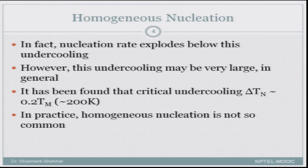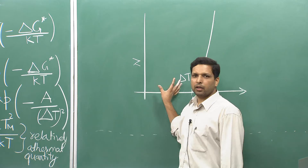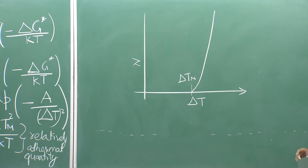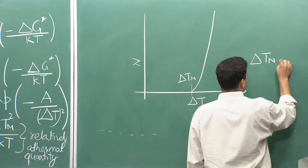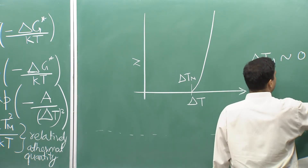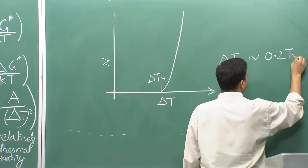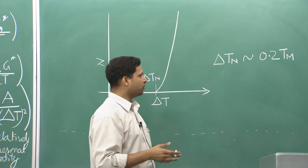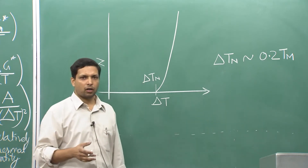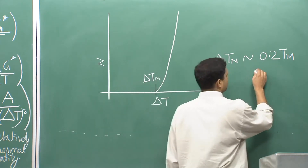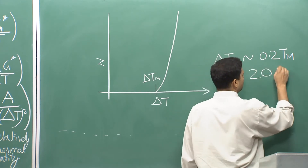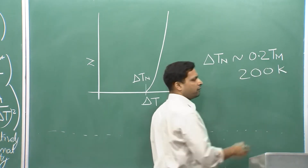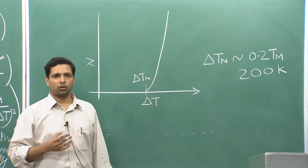However, we have not yet looked at the absolute value of this undercooling. In general, ΔT_n is approximately 0.2 times T_m. For most materials with a melting point of the order of 1000 K, we are looking at about 200 Kelvin — which is a very large undercooling.